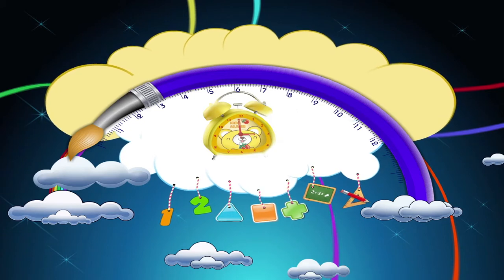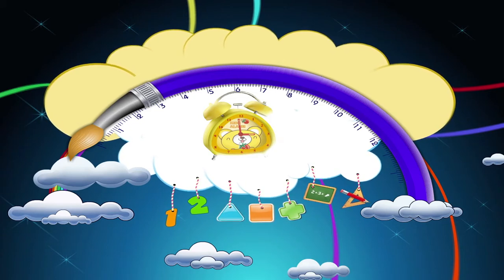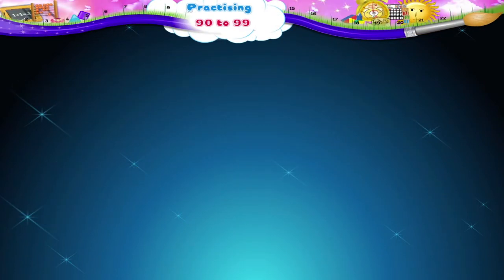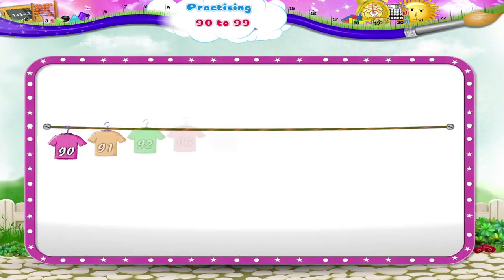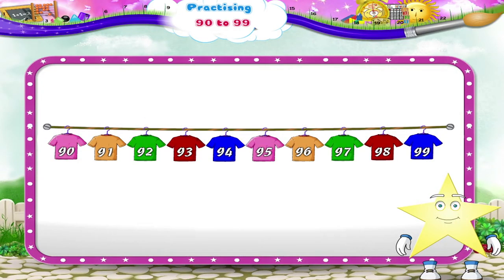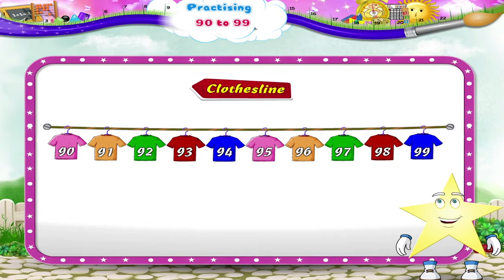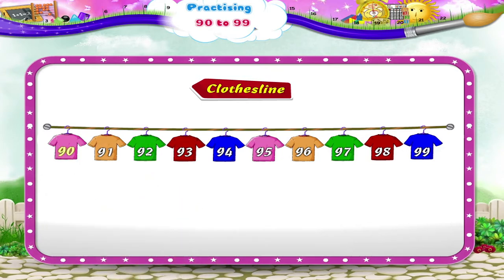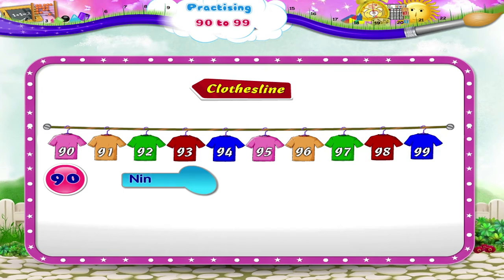Practicing 90 to 99. Hey Starry, look at this clothesline. The T-shirts have numbers on them. Do you know what the first number is, Starry? Of course you do. The number 90. 9 and 0, 90. N-I-N-E-T-Y, 90.